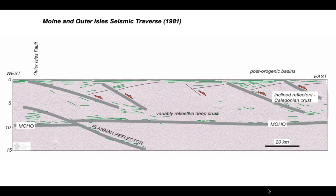There's the Moho. It may even be offset by something coming out of the mantle called the Flannan reflector, which in this case would be a thrust fault. Then within the continental crust above, there are a whole series of structures inclined down to the right, which are faults. The more reflective crust on the eastern side may reflect Caledonian structures reactivated by normal faults. The success was imaging the outer isles fault and picking the Moho — but surprisingly, the Moine Thrust doesn't really show up very well at all.